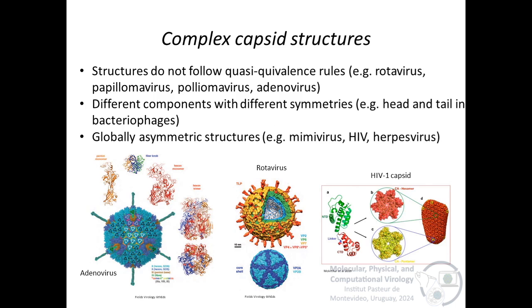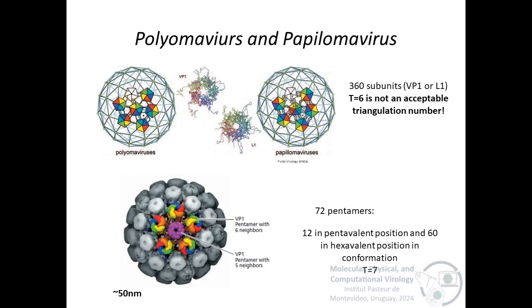There are also complex capsids. These can be structures that do not follow quasi-equivalence rules, or viruses with different components of different symmetries, or viruses with globally asymmetrical structures. Some clear examples of complex capsids are the adenovirus capsid, which have long fibers on its 12 vertices, and viral proteins that help stabilize the capsid shell called cement proteins. Another example is rotavirus, which has several shells, or the HIV capsid, which is a conical shape.